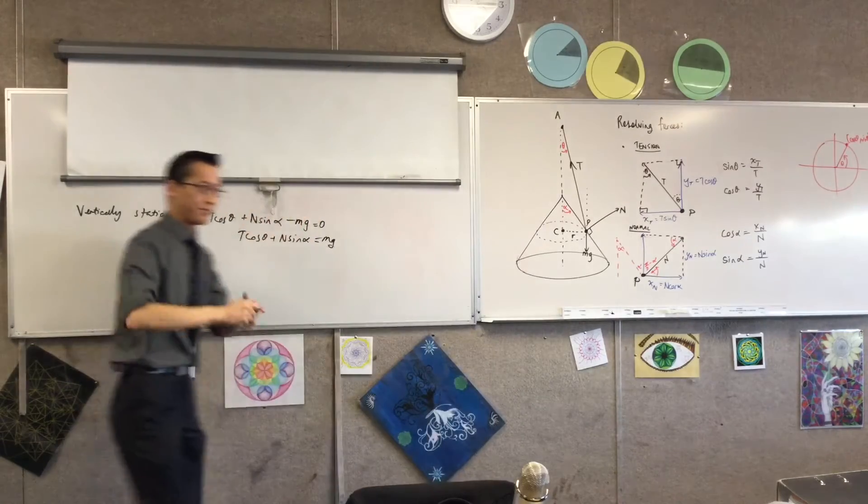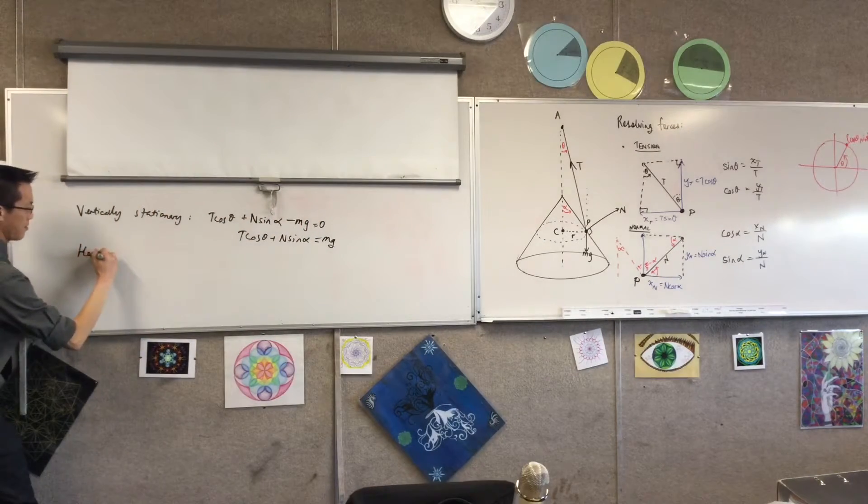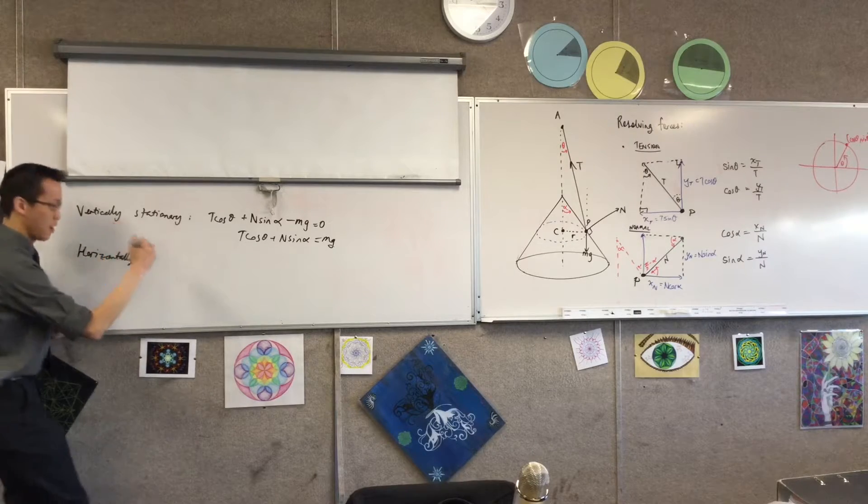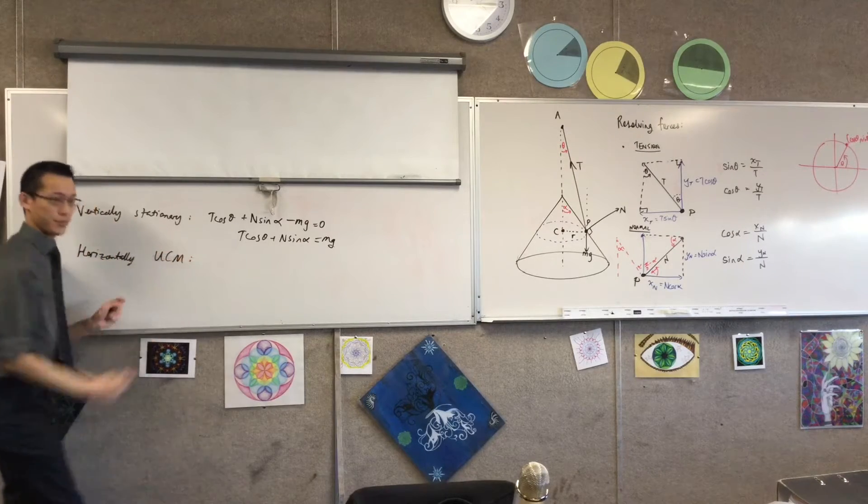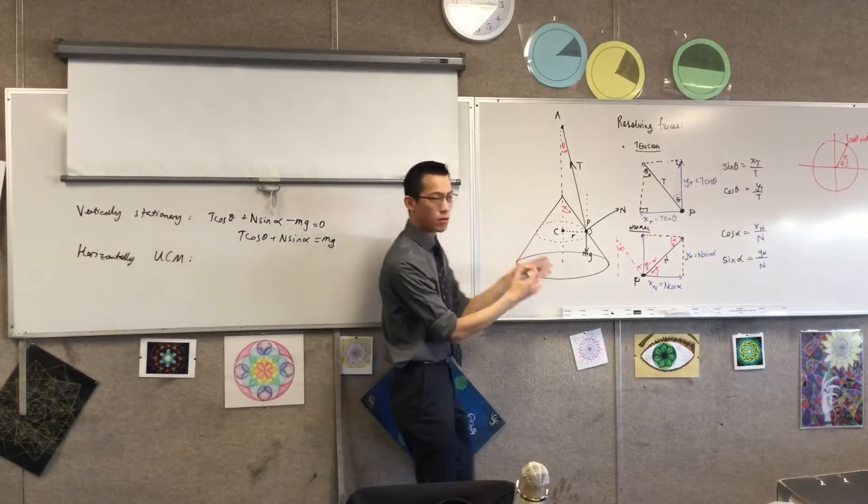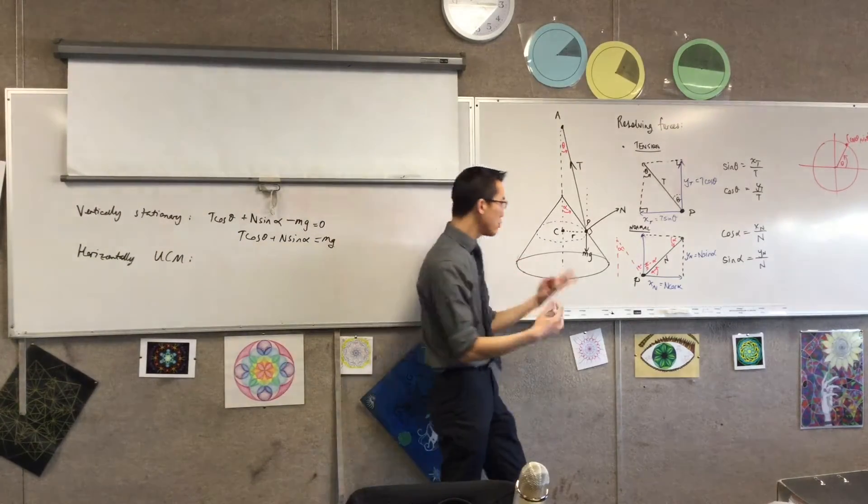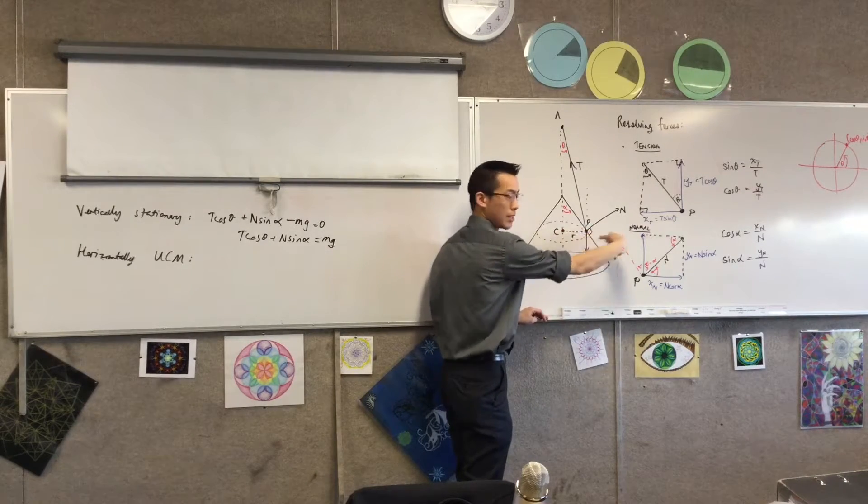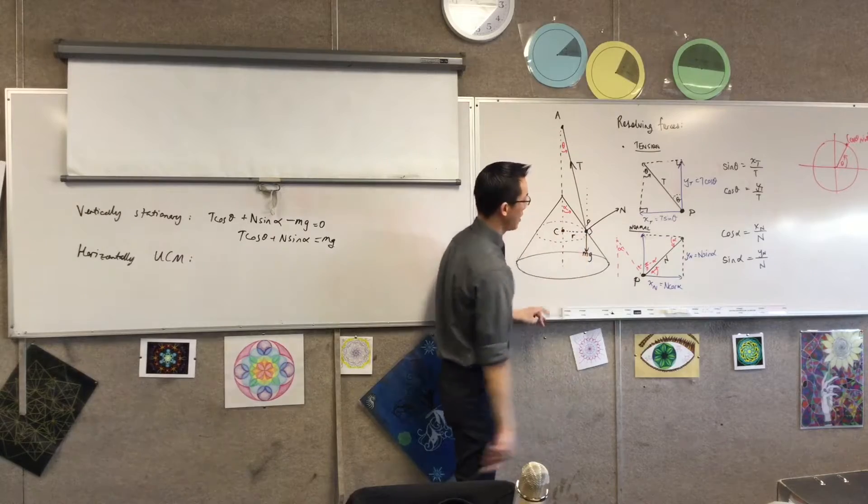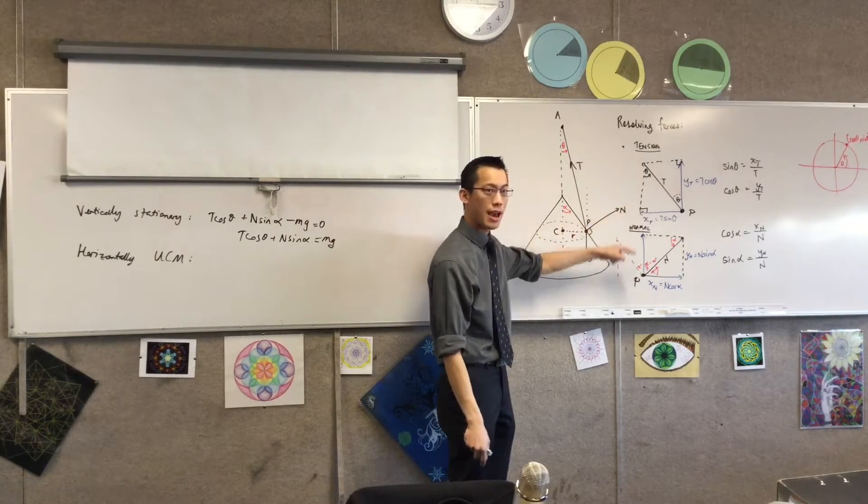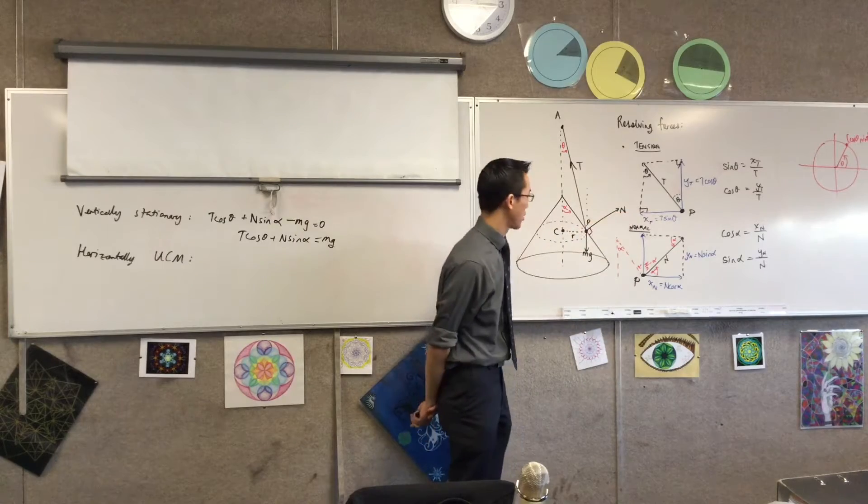That was vertically. Now, horizontally, it's moving in uniform circular motion. Okay? So therefore, I look again, and I say, well, where are all of the horizontal forces going? And they should add together to make mr omega squared in toward the center. Okay?